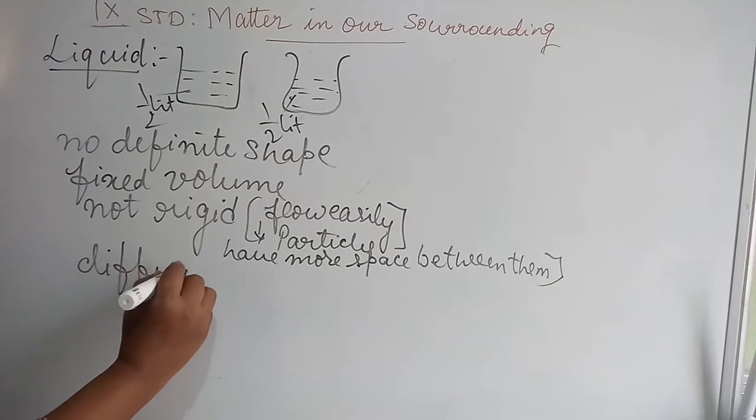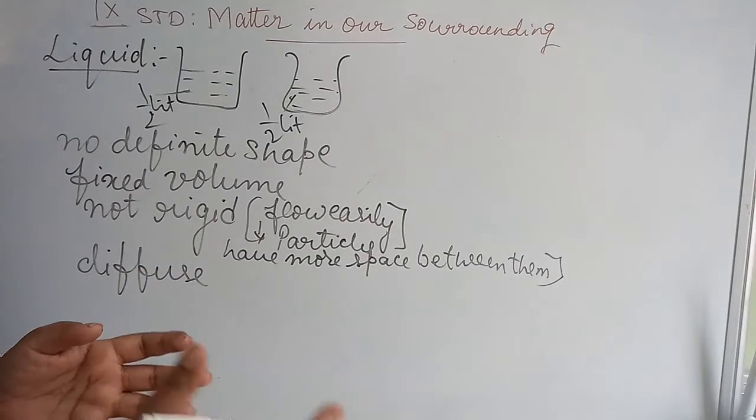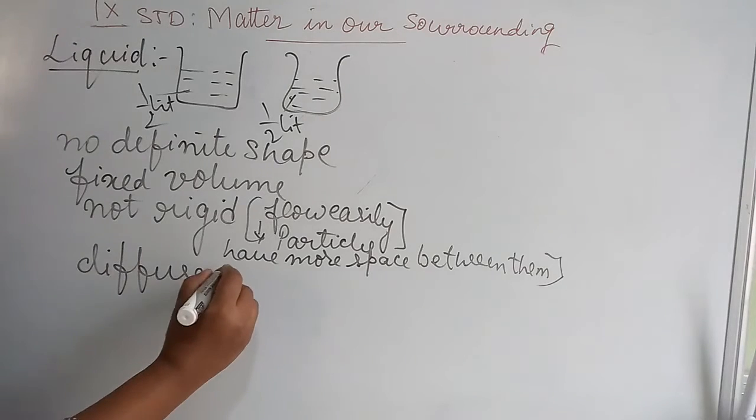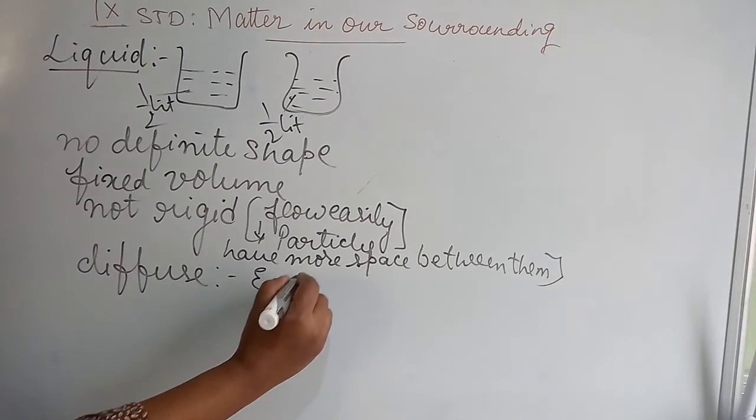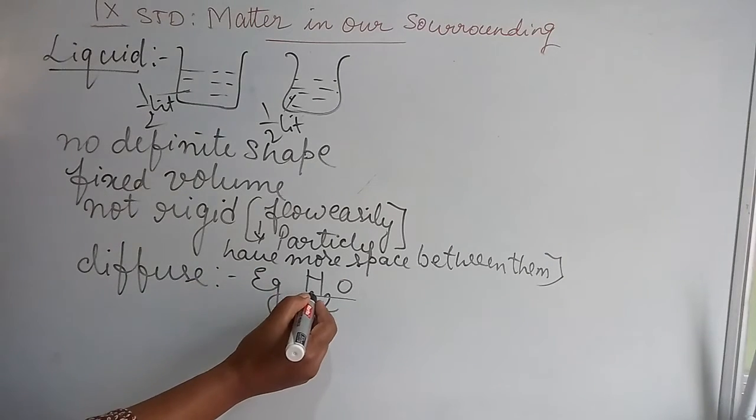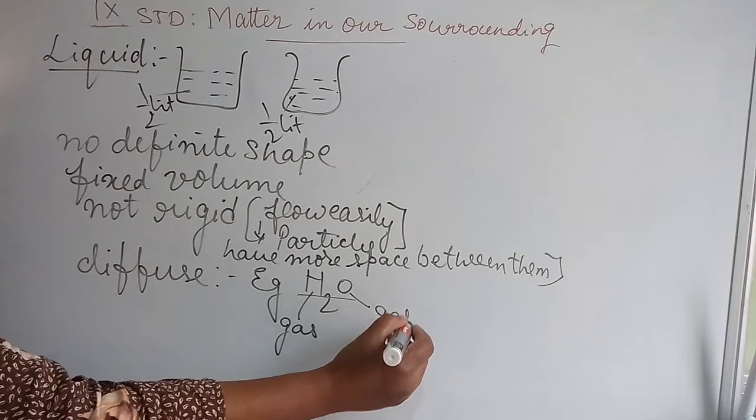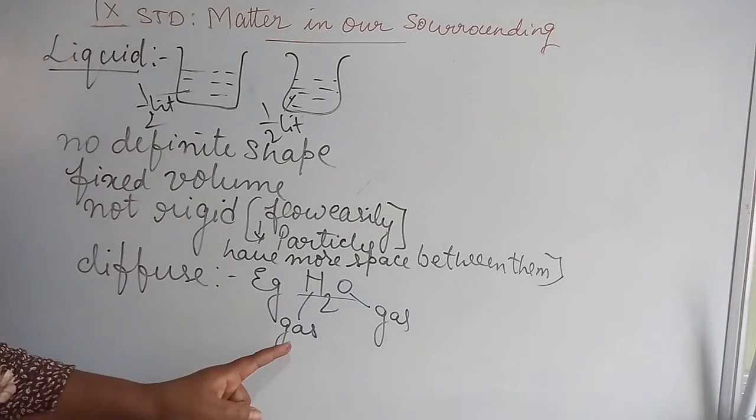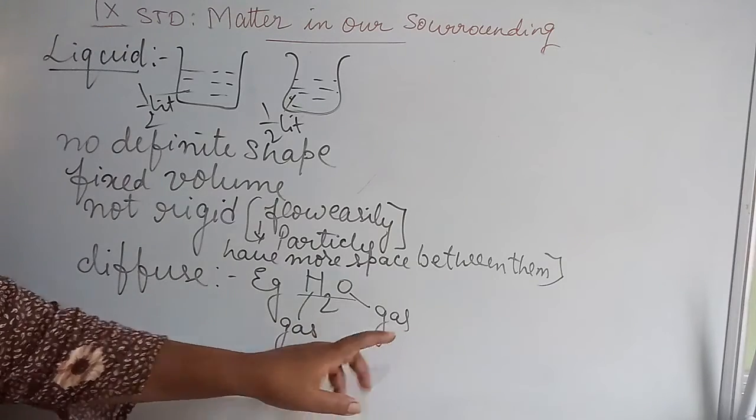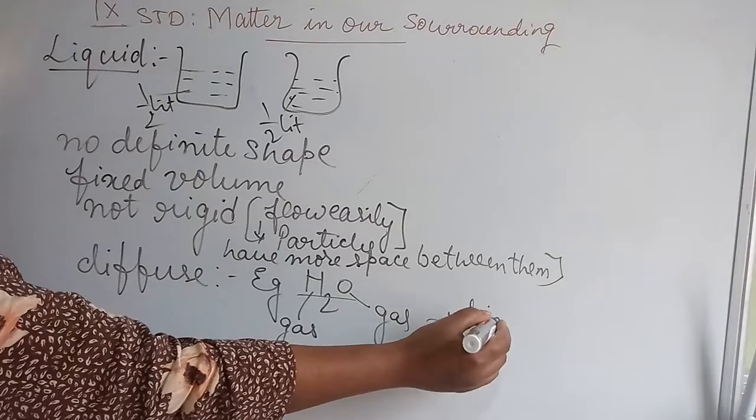Then we have one more property called diffusion, which means getting along with other states of matter. For example, if we take water H2O - H2O is a liquid, whereas H is a gas and O is also a gas. Hydrogen and oxygen are gases that come together to form a liquid.